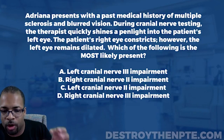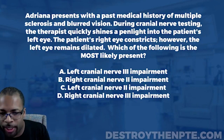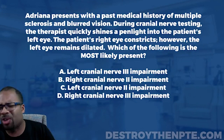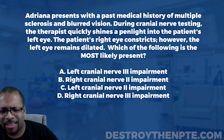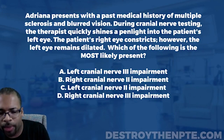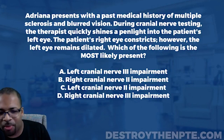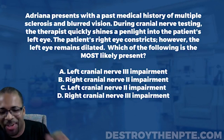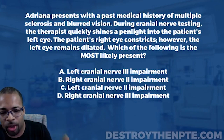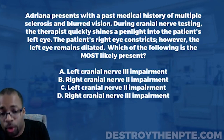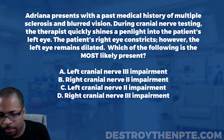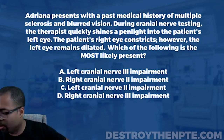Before we even start looking at this question, let's level the playing field. What is cranial nerve 3? You should be saying oculomotor — oculomotor. And then cranial nerve 2 is going to be the optic nerve. All right, we've leveled the playing field. Let's go to the top of the question and start knocking this down.